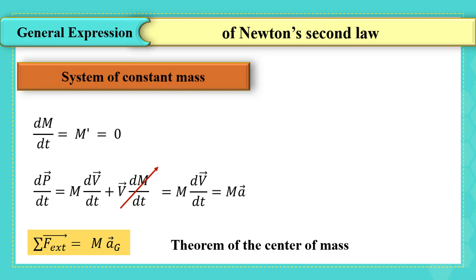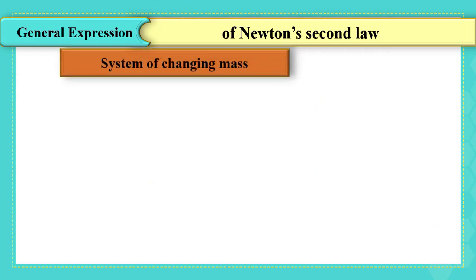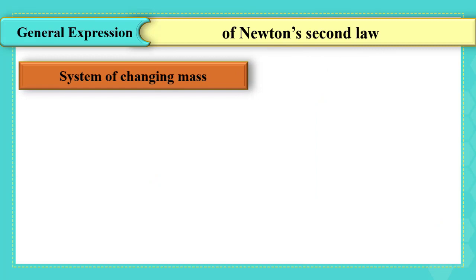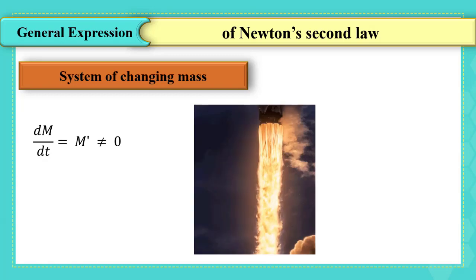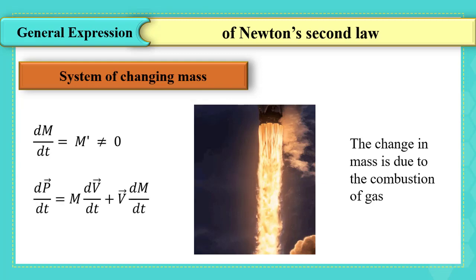This is the theorem of the center of mass, keeping in mind that the sum of internal forces between the particles of the system is zero. Now, if the system has changing mass — like a launching rocket — the change in mass is due to the combustion of gas. In this case, dp vector by dt equals mass times the variation of velocity plus v vector times the variation of mass.